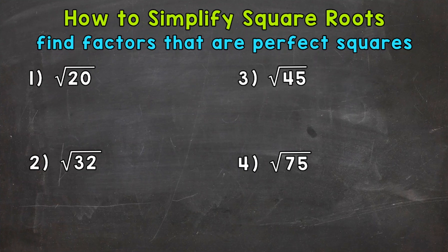For example, we know that 4 times 5 equals 20. 4 and 5 are factors of 20. 4 is a perfect square. So to simplify, the square root of 20 equals the square root of 4 times 5.